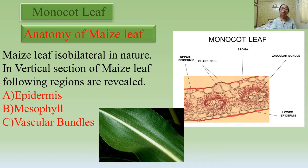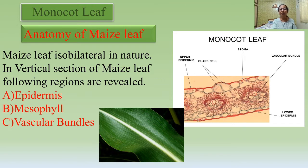When we study the anatomical nature of isobilateral leaves, both the dorsal and ventral epidermis are similar in nature, and the middle portion — the mesophyll tissue — is also not well differentiated into two different tissues; it has the same type of cells. To study the anatomical structure of the maize leaf, we cut it in a transverse or vertical plane, which reveals three major regions: the epidermal region, mesophyll tissue, and vascular bundles.